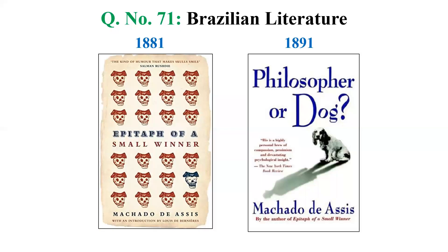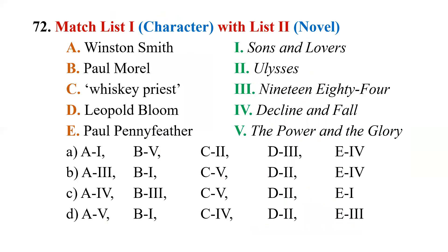In Brazilian literature, Machado de Assis — M-A-C-H-A-D-O D-E A-S-S-I-S — is considered a classic writer. His famous work Epitaph of a Small Winner, published in 1881, is considered his magnum opus. He is also known for another novel, Philosopher or Dog, published in 1891. Now let's go to question number 72.